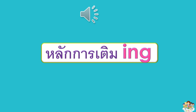ข้อ 3 Verb ที่มีเสียงสั้น มีสระเพียง 1 ตัว และมีตัวสะกดเพียง 1 ตัว เช่น cut, sit, run ให้เพิ่มตัวอักษรตัวสุดท้ายซ้ำแล้วค่อยเติม ING เช่น cutting, sitting, running.